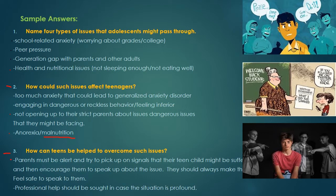First of all, parents must be alert and aware, and try to pick up on signals that something is wrong with their teenage child. They should encourage them to speak up and have a communicative relationship so teens feel safe to open up — to them or to another adult, such as a teacher or supervisor in case they are being bullied at school. Finally, professional help should be sought in case the situation becomes very severe or profound.